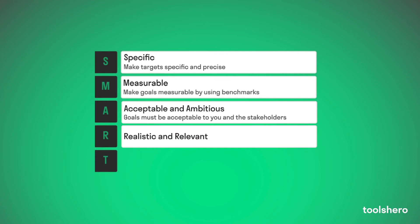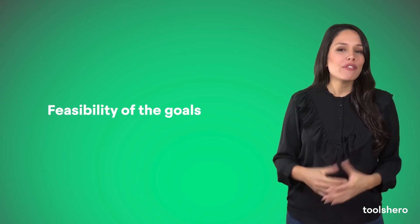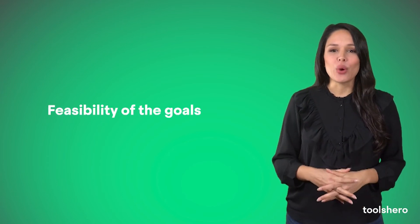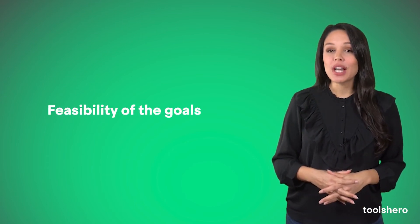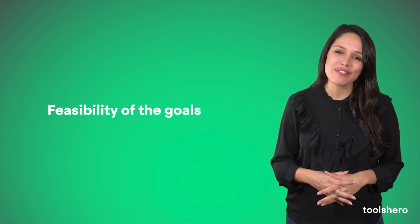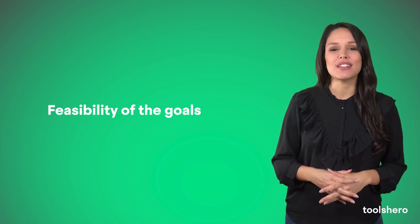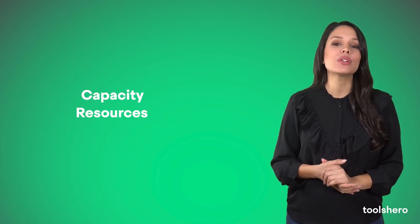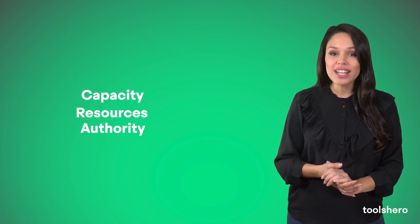The R for Realistic and Relevant ensures that goals must be achievable with available resources. It's about the feasibility of the goals. The objective must be challenging and bring benefits to the employees involved. They must also have the capacity, resources, and authority to get started.